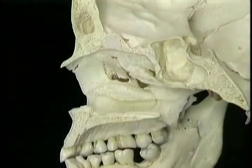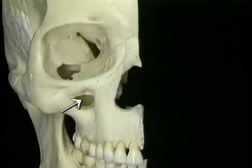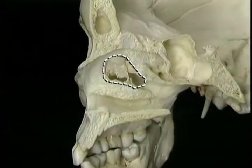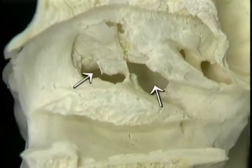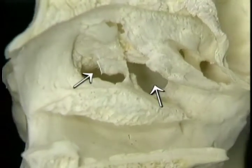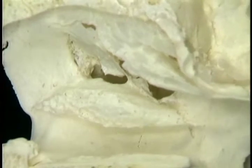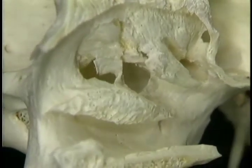Now that we've seen the ethmoid bone, we'll return to the paranasal sinus cavities and see how they connect with the nasal cavity. The frontal and maxillary sinuses both open in this complex area beneath the middle concha. In a dry skull, there are two large irregular openings from the nasal cavity into the maxillary sinus, separated by the uncinate process. In the living body, the real opening of the maxillary sinus is quite high on the medial wall of the maxillary antrum.